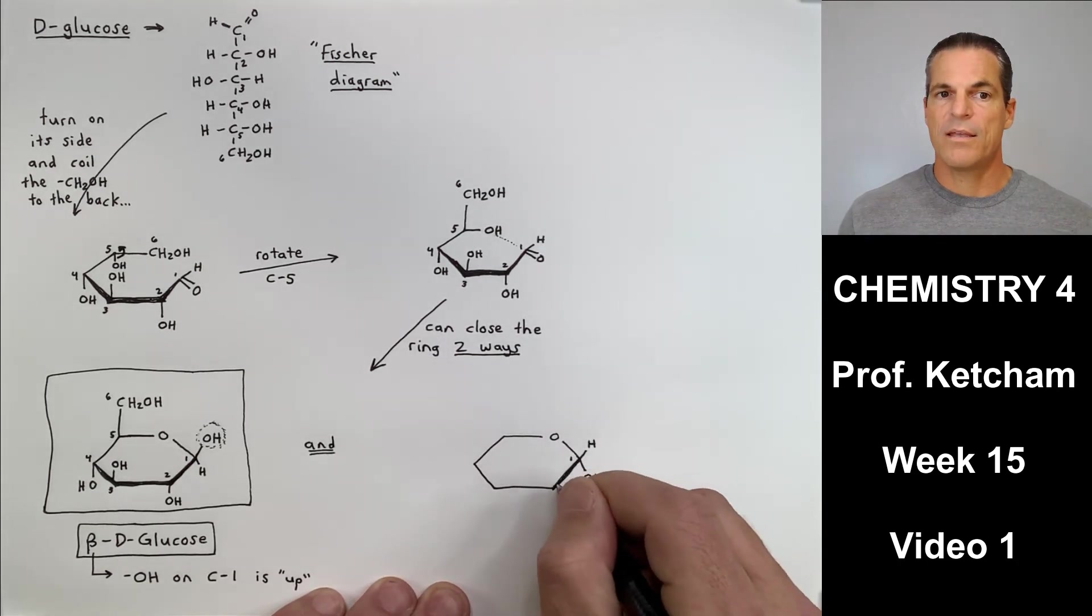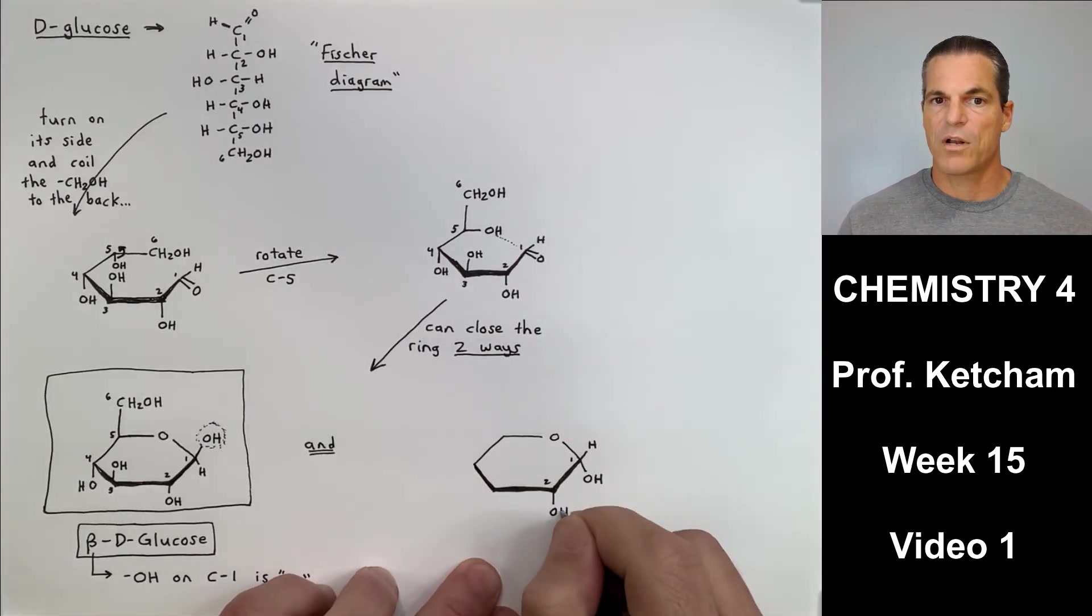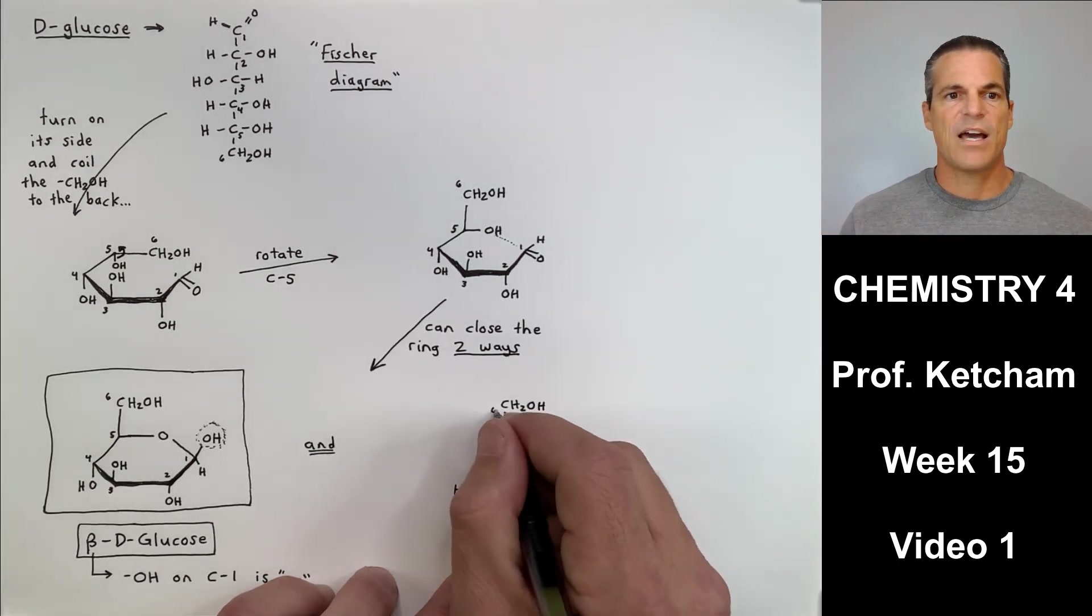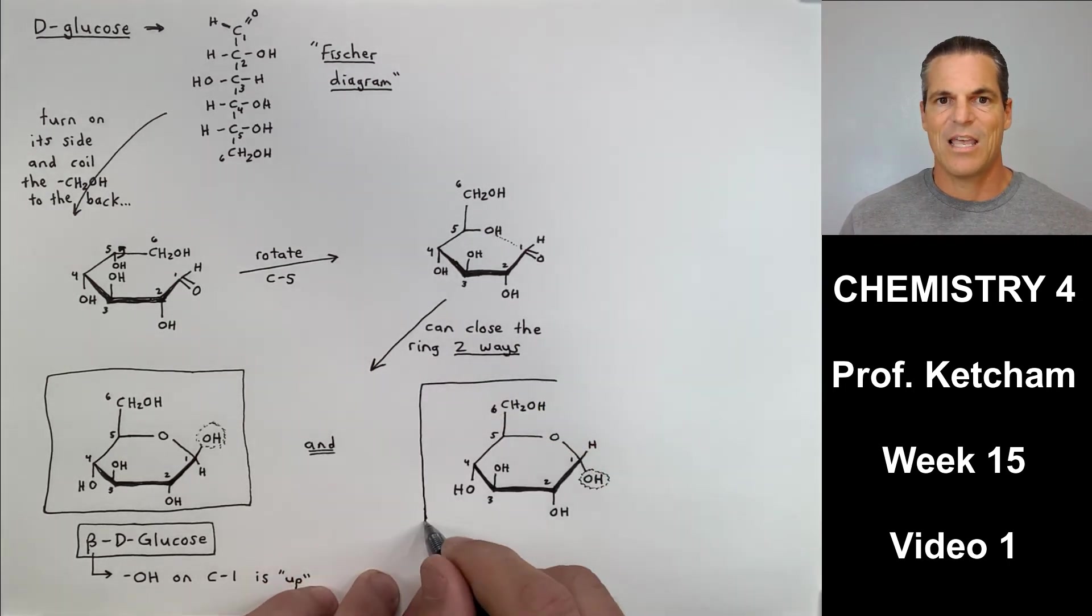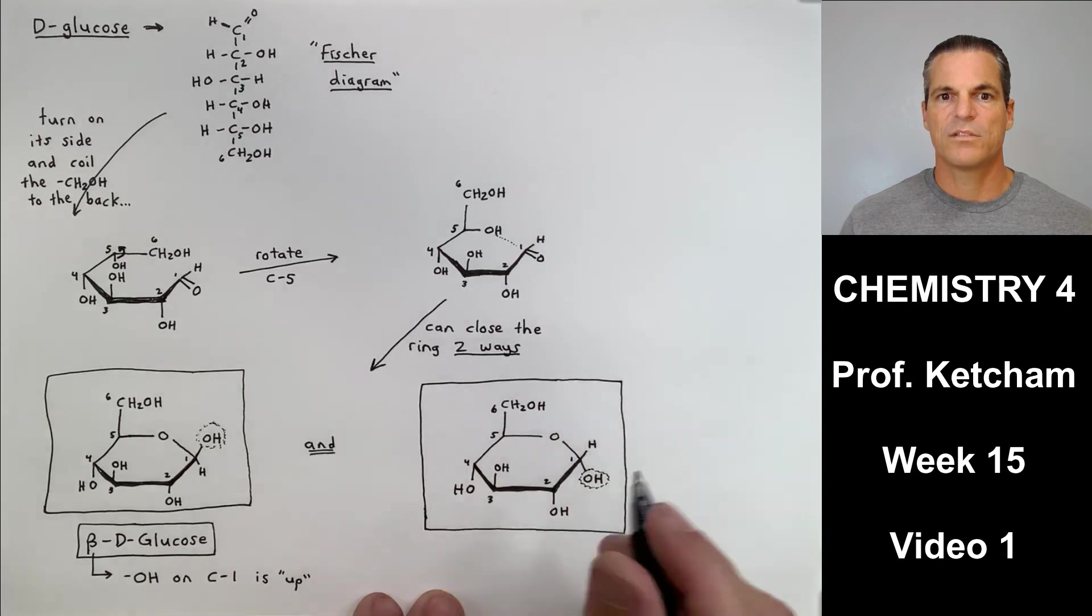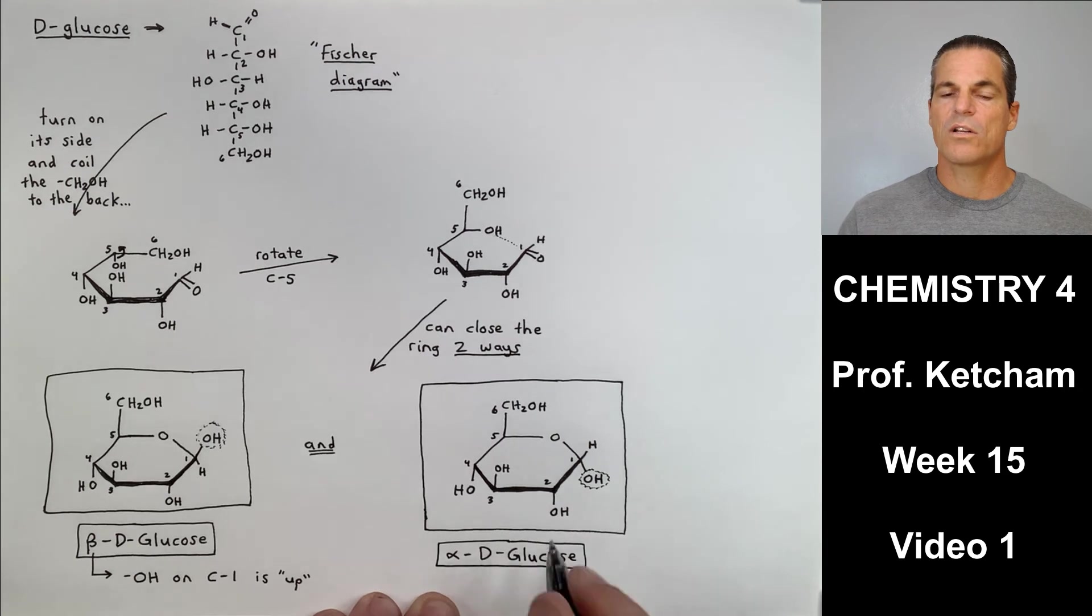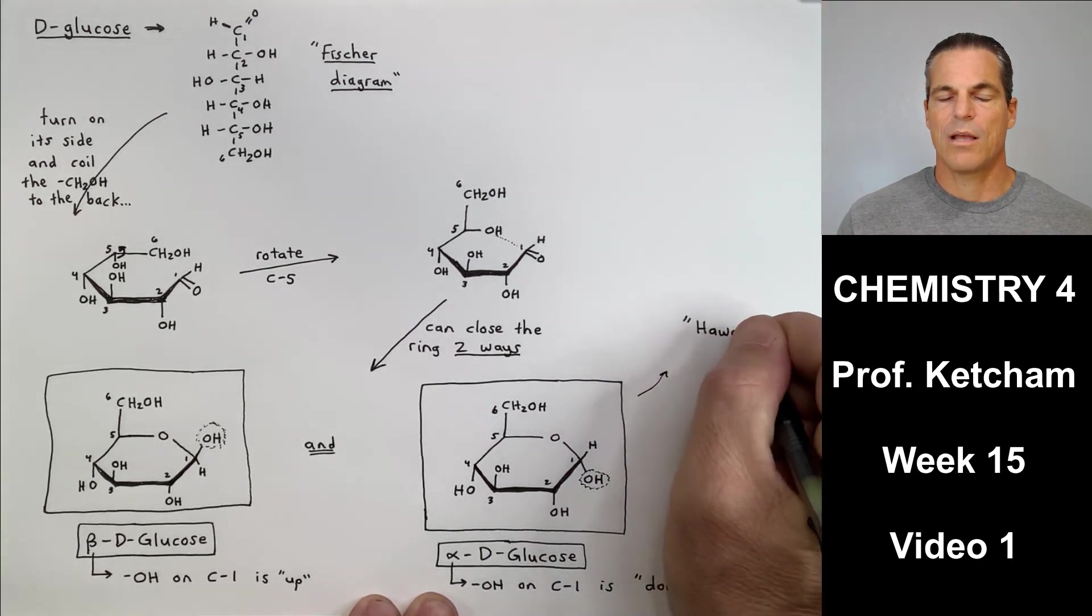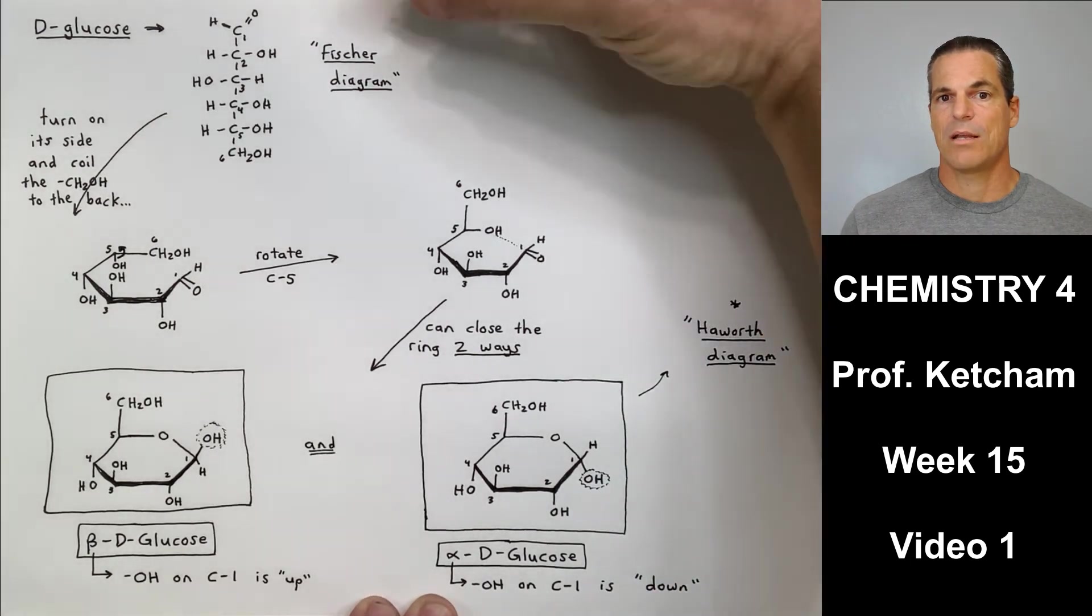Now the other way to close the ring is when the OH on carbon one is now going down. And I'm drawing this structure right now as we speak. All the other carbons, carbon six, carbon five, carbon four, carbon three, carbon two, unaffected, look exactly the same. So you know how to draw those. The only difference is that alpha D glucose, the OH on carbon one is down. You notice that these are closed cycles. These are not called Fischer diagrams or Fischer projections anymore. These are called Haworth diagrams.